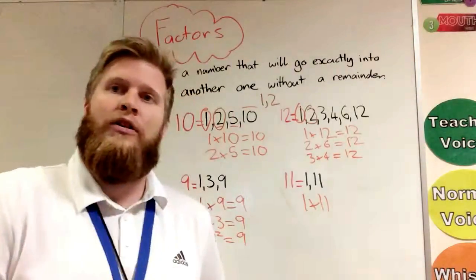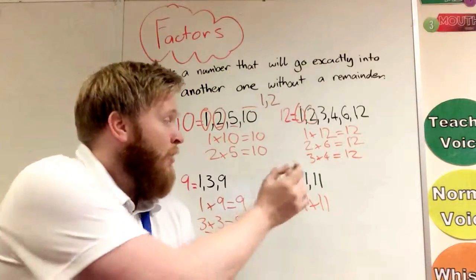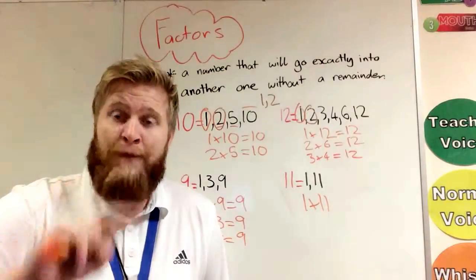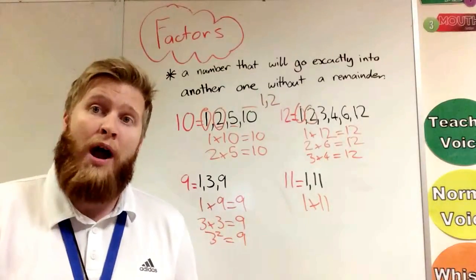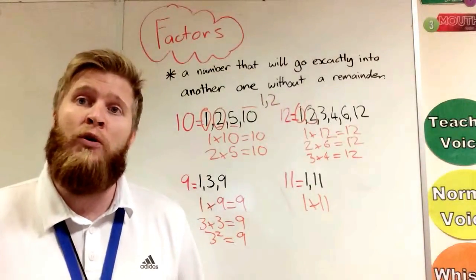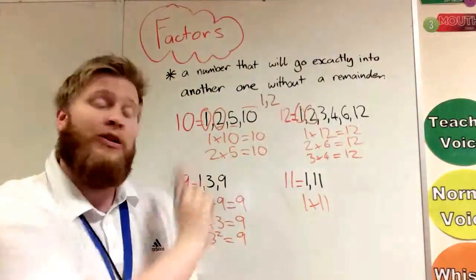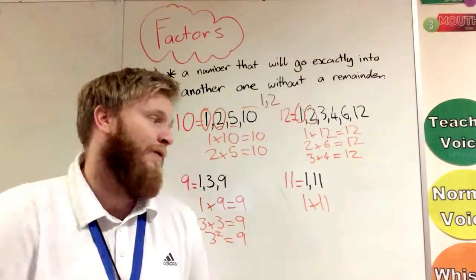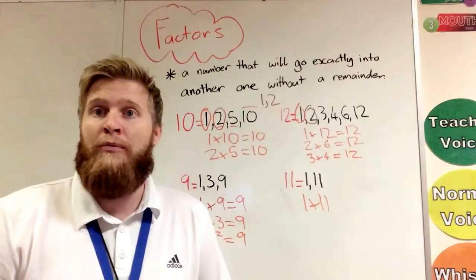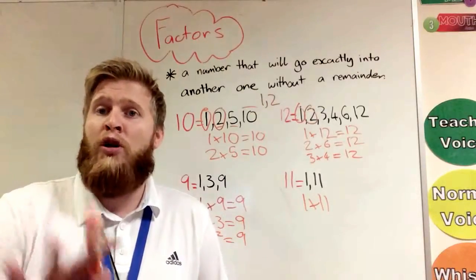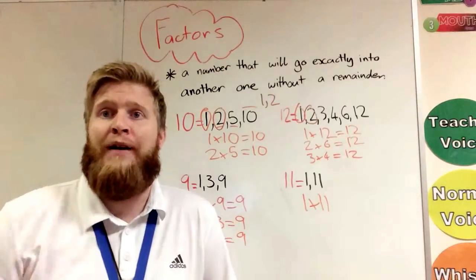If we keep going up, those are the only factors. Now I'm not going to go too much into this because I'll look at it in another video, but a number that only has two factors, that is what we call a prime number. And all these numbers, because they have more than 1 and itself as a factor, they are called composite numbers.